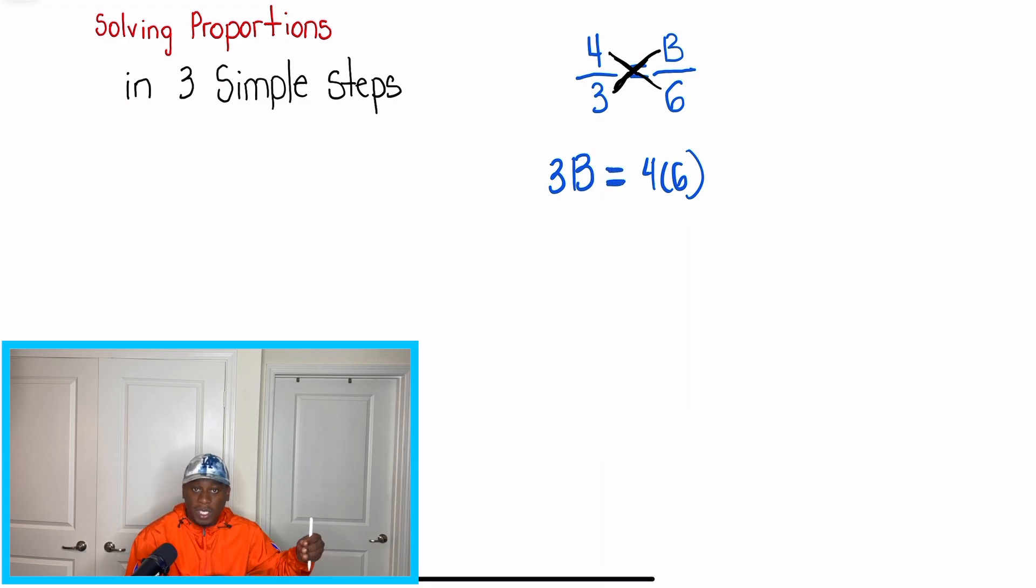We have to understand that there's going to be an equal sign in between those two answers. What we get for 3 times B, we're going to have an equal sign in the middle, and then the answer of 4 times 6 on the other side. So that's step one. We draw our X, and then after we draw our X to cross multiply, what we want to do is set up an equation.